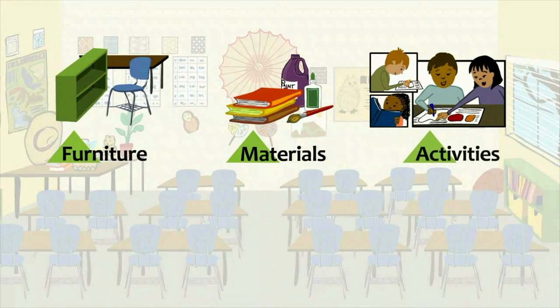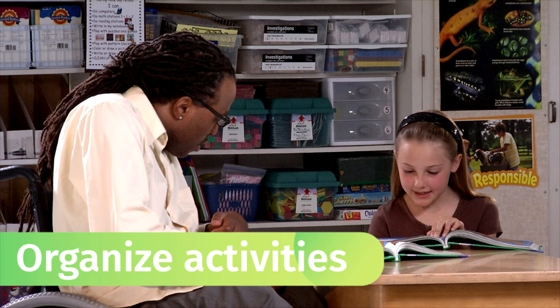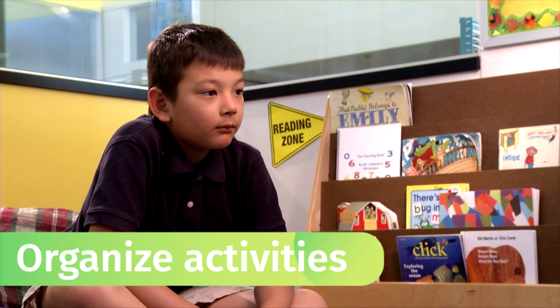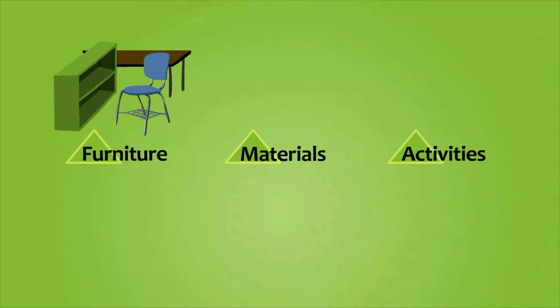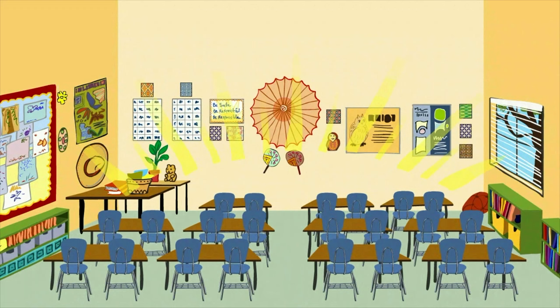Now, think about activities. Is there a setting for group activities? Is there an area for individual work? Is there a place where students can go to settle down when they're having a hard time? When you carefully consider the function of furniture, materials, and activities, you can design a classroom environment that promotes learning and positive behavior.